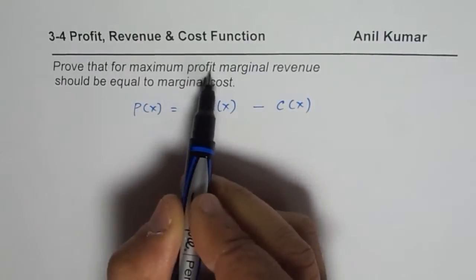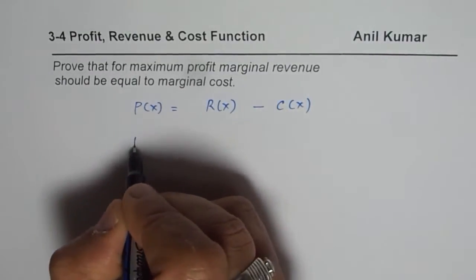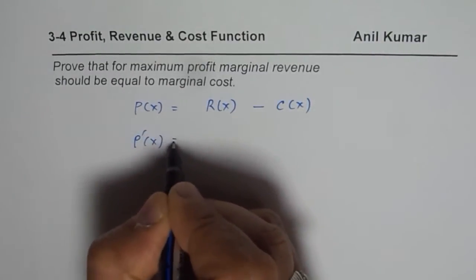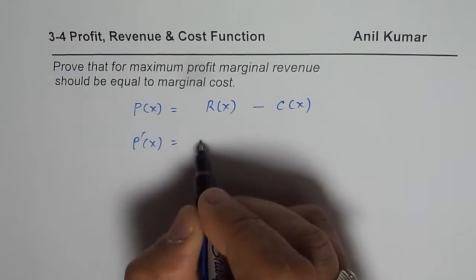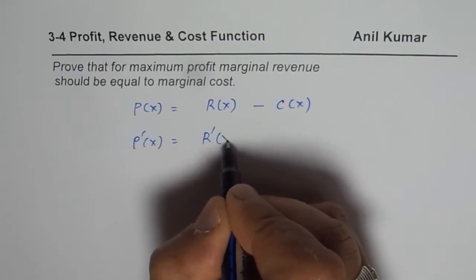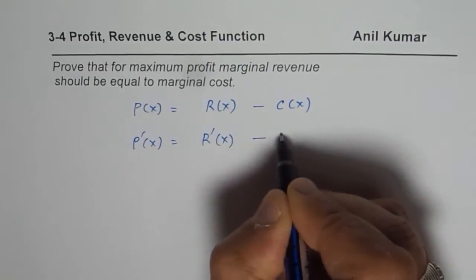Now, when we need to maximize profit, we need to take derivative of this. So derivative of this will be, both are functions of number of items. So it would be R'(x) minus C'(x).